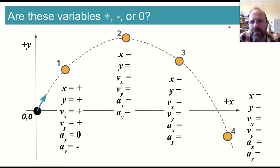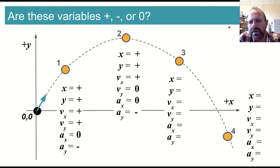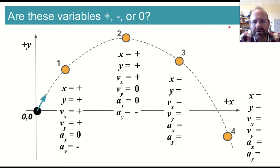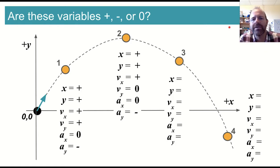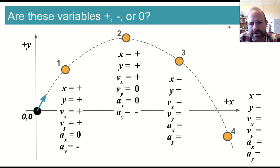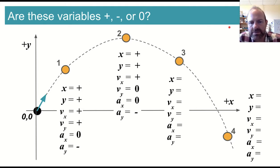If we go to point 2, we are still in the positive area for position. The x component of velocity is still positive. But here at the peak of the parabola, the y component of velocity is zero for an instant. The x component of acceleration is still zero, and the y component is still downward or negative.